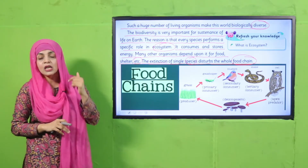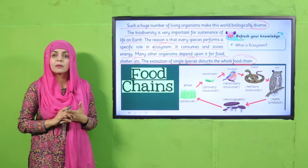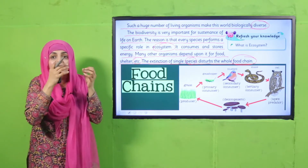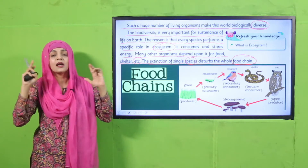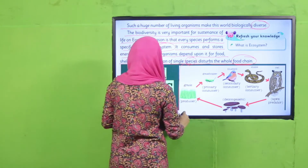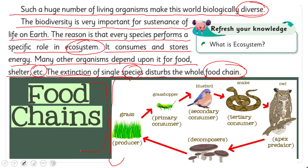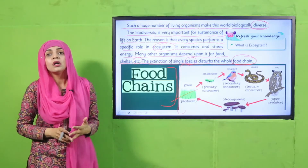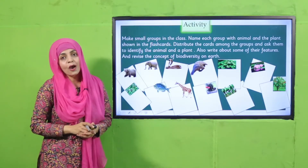Think about what an ecosystem is — it is the interaction between animals, plants, and their environment. You can see a food chain here: if we remove even one animal or plant, the whole ecosystem would be disturbed. For example, if grass — the producer — is removed, the grasshopper feeding on it will be affected, then the birds feeding on grasshoppers, and so on. The entire food chain would be disrupted.